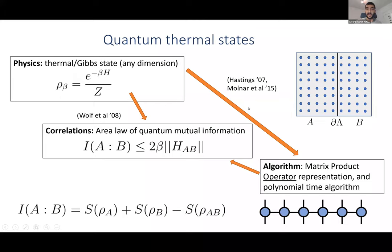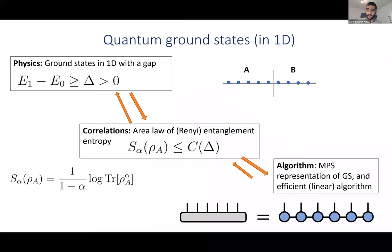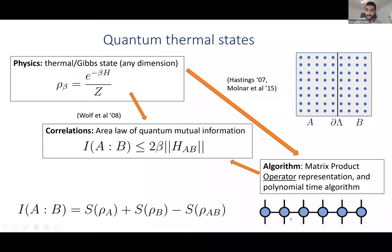Another thing we know, independently of the area law, is that thermal states can be approximated not with a matrix product state but with a matrix product operator (MPO), which is the mixed-state analog of an MPS. The difference is that now there's an extra leg representing that this is a mixed state rather than a pure state. From related works we also know there is a polynomial time algorithm to approximate thermal states in any dimension — of course the larger the dimension, the worse the scaling.